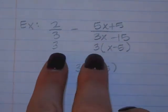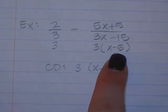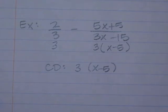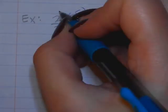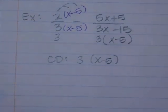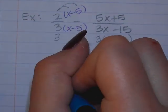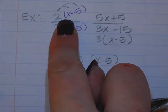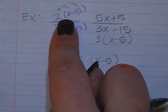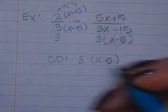Both denominators have an x minus 5, so both need it. What does the first fraction need? The x minus 5. What does the second fraction need? Nothing — it's got it all. So the first fraction is going to have 2x minus 10 in the numerator.